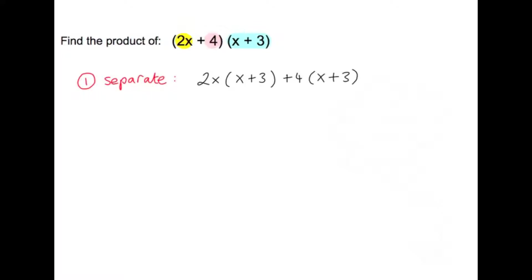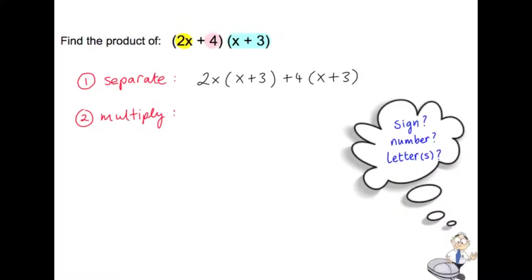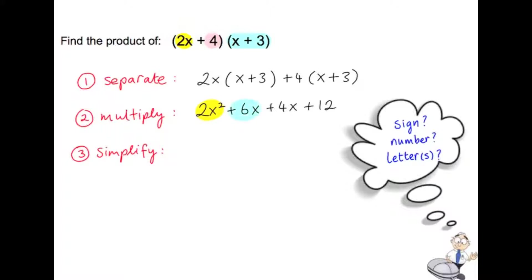Now we're ready for step 2 — we're going to multiply this out. Think about the sign, the number, and the letter. 2x by x is plus 2x squared. 2x by plus 3 is plus 6x. Plus 4 by x is plus 4x. And plus 4 by plus 3 is plus 12. The last step is to simplify — are there any like terms? We have one x squared term, two x terms, and a plus 12. Adding plus 6x and plus 4x gives plus 10x, so the answer is 2x squared plus 10x plus 12.